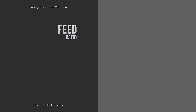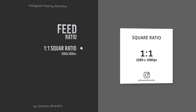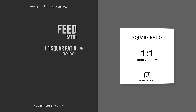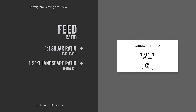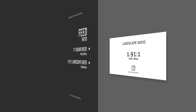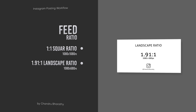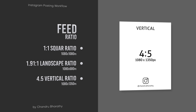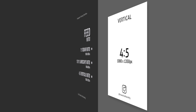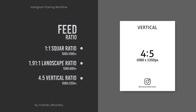In a feed post, there are 3 types of dimensions. Square ratio: 1080x1080 pixels. Landscape ratio 1.91:1, with pixel dimensions of 1080x680 pixels. Vertical ratio is 4:5, with dimensions of 1080x1350 pixels.